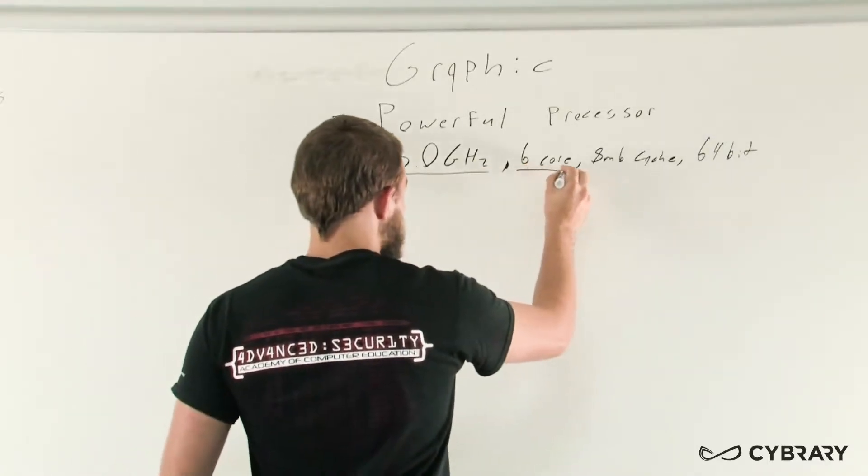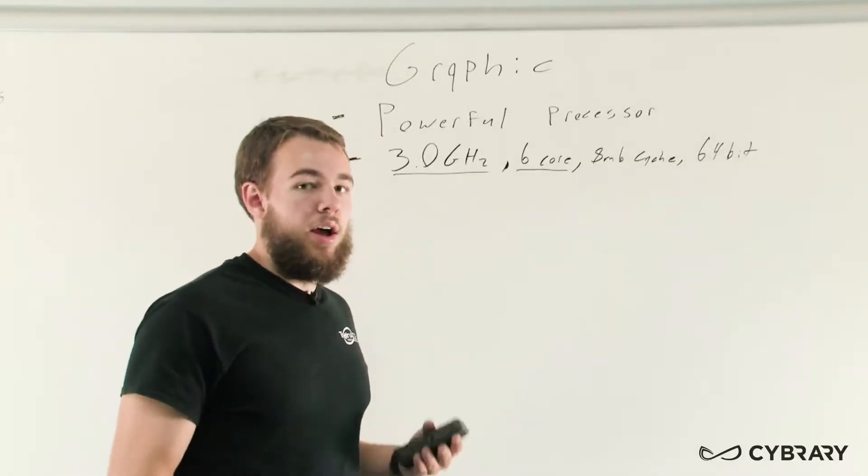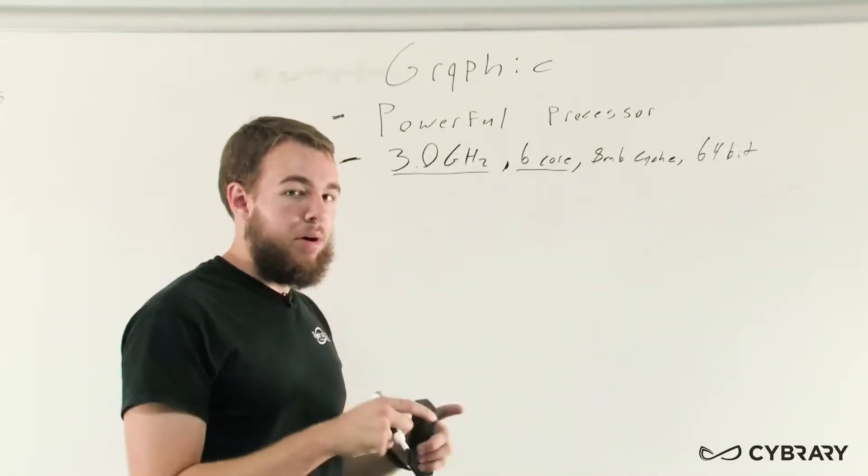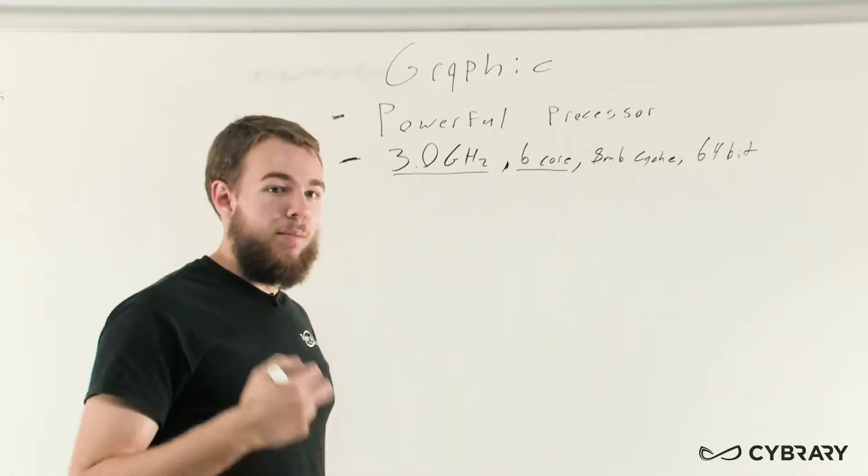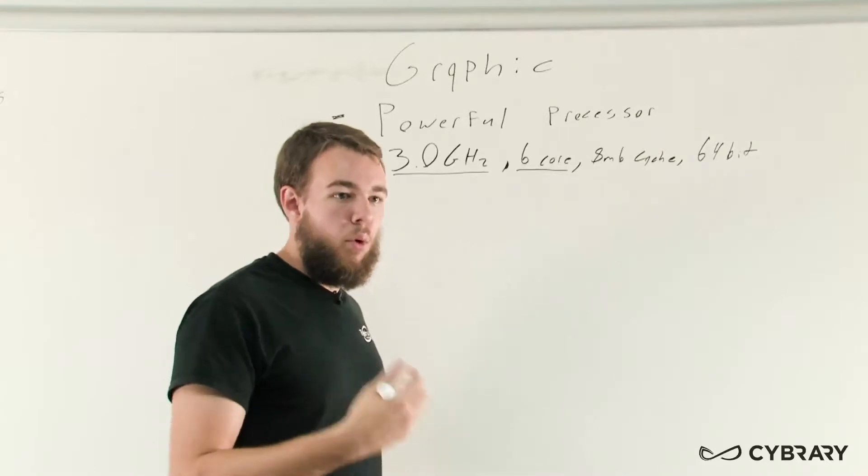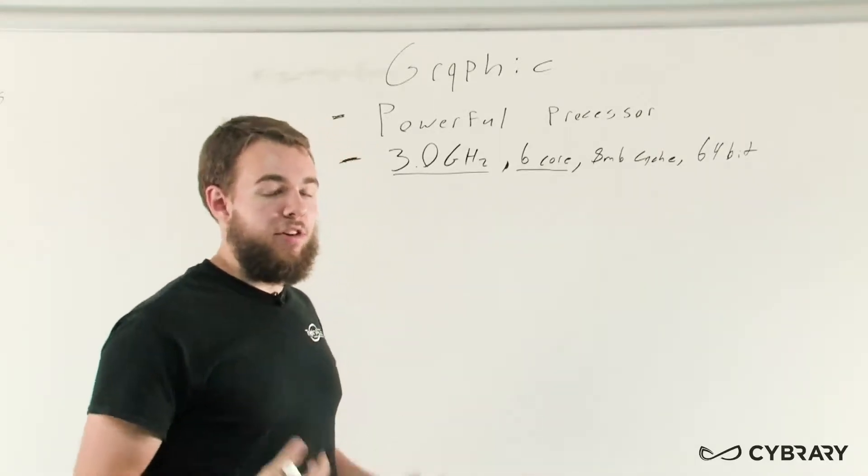We want six cores because the more cores we have in a processor, it's like having multiple CPUs, but they're all built into one single processor chip. The more cores we have, the more instruction handlers we have for processing, the more different chips we have.